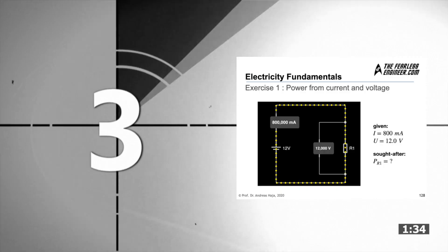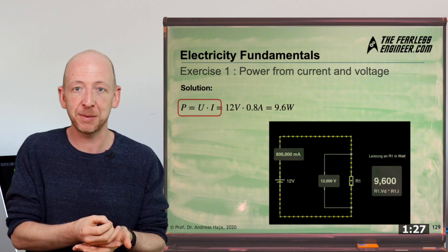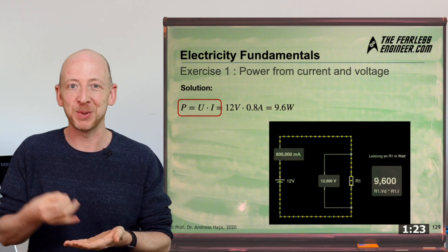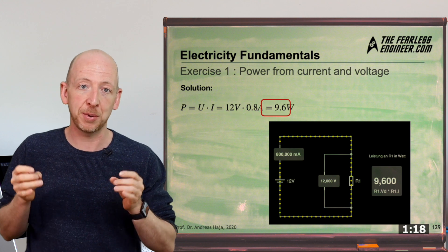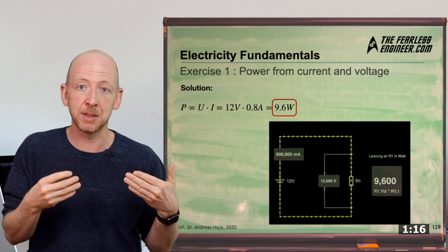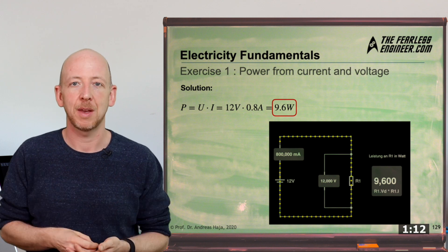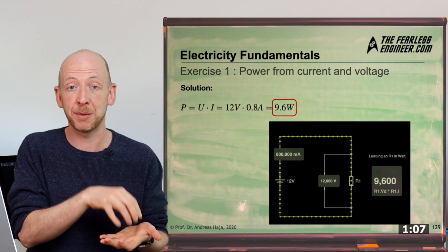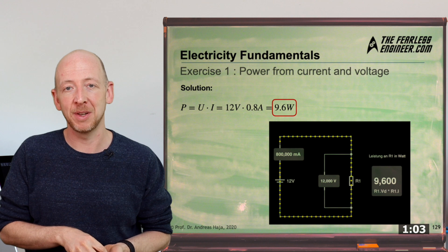Here's the solution. To solve the task we can simply use the power law in its original form which states that power equals voltage times current. If we use the numerical values which are 0.8 amps and 12 volts, we get a power of 9.6 watts which is converted into heat within the resistor. This is already the solution to the first problem. The answer to how to arrive at the original form of the power law and what energy and power have to do with it can be found in the last video.